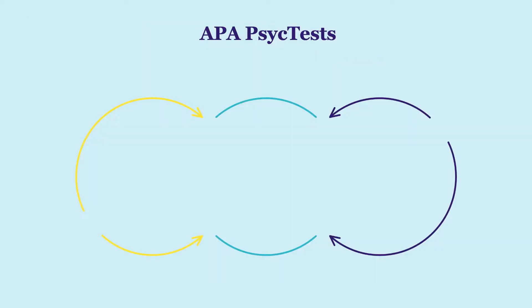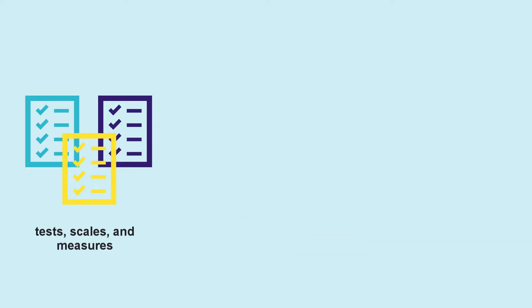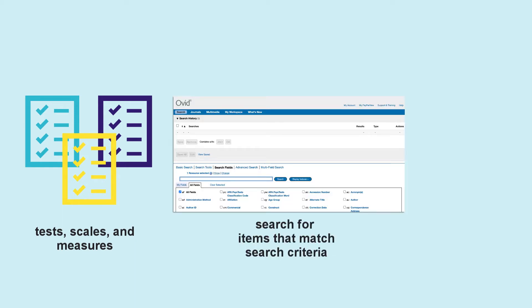Whether you plan to use a test as an example for class, to administer to study participants, or to review as a starting point to develop your own test, APA PsychTest is your ideal starting point. This database provides information on tests, scales, and measures that were originally published in journal articles. APA PsychTest indexing allows you to search for and discover tests and measures that match your search criteria. As a result, this database makes it possible to find tests that were previously lost in the literature and may be hard to discover using other research tools.